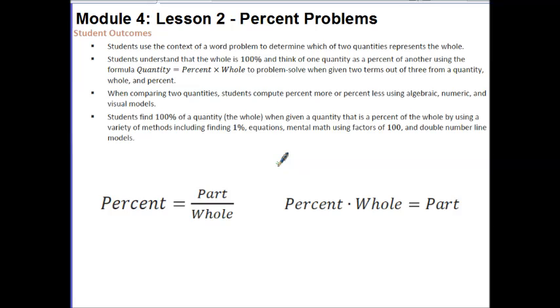Students find 100% of a quantity, the whole, when given a quantity that is a percent of the whole by using a variety of methods, including finding 1%, equations, mental math using factors of 100, and double number line models.